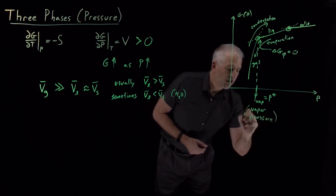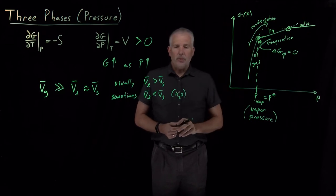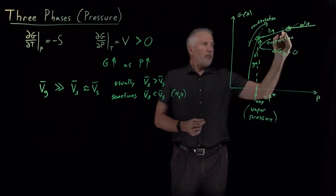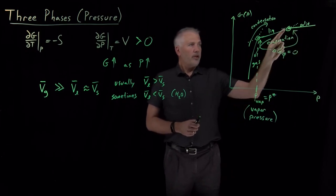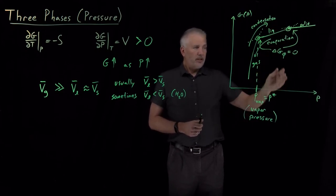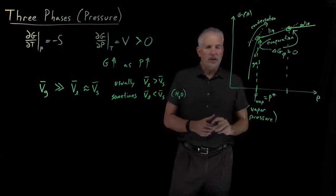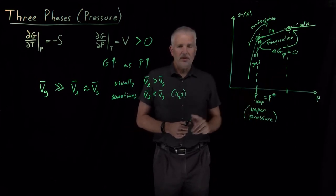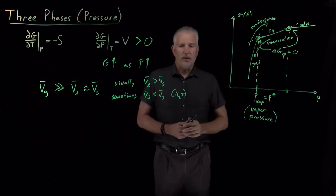The vapor pressure is the pressure at which the gas and the liquid are in equilibrium with each other. There's also an equilibrium between liquid and solid — at that point the free energy of the liquid and the free energy of the solid are equal to each other. That pressure at which we can convert the liquid into the solid is not as commonly discussed and doesn't have a terribly common name.